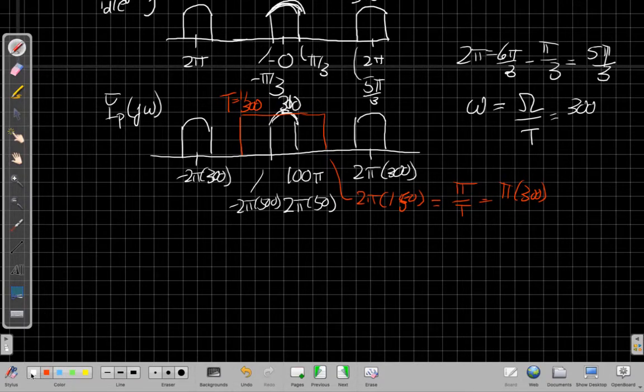And so if I draw the final continuous time output Fourier transform, I have just this middle copy left.